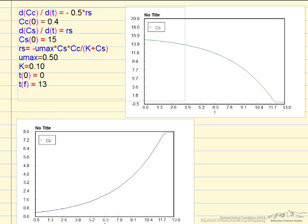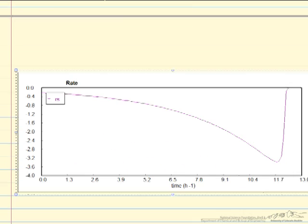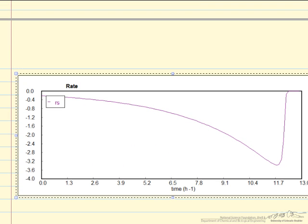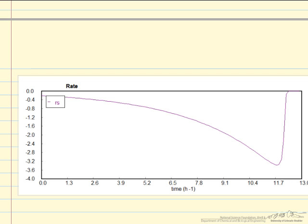In addition to the concentrations, we can ask Polymath to plot the rate. This is R sub S, which is negative, so the absolute value of the rate is increasing, and we're using up the substrate faster until we get to the highest rate of consumption, and then it starts dropping off rather quickly because we're using up the substrate.